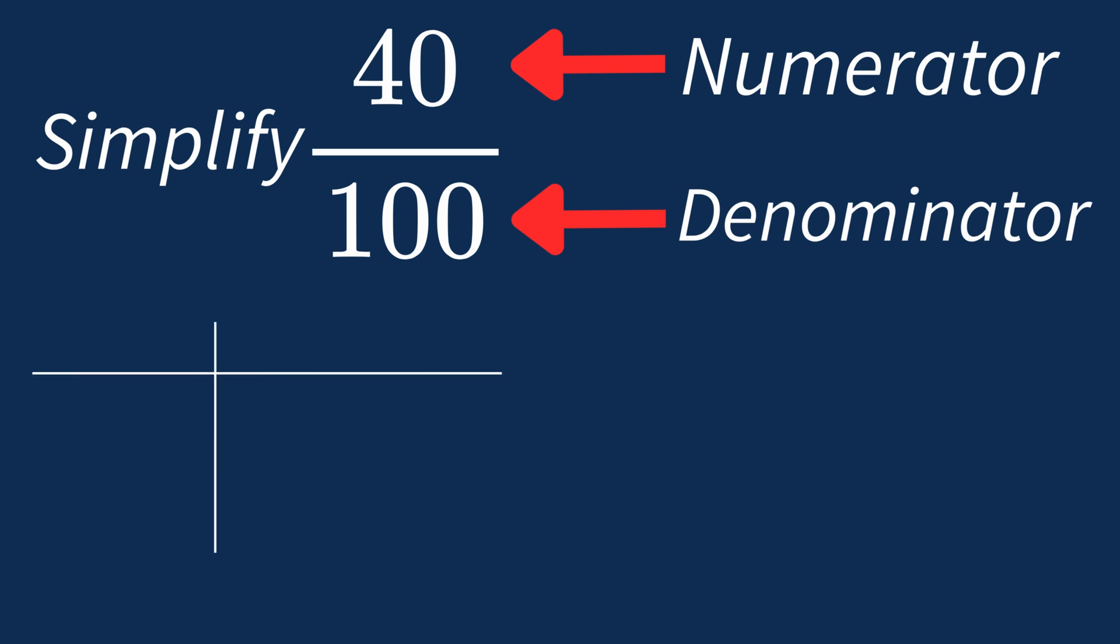First, let's list out the factors for each. For 40, the factors are 1, 2, 4, 5, 8, 10, 20, and 40.